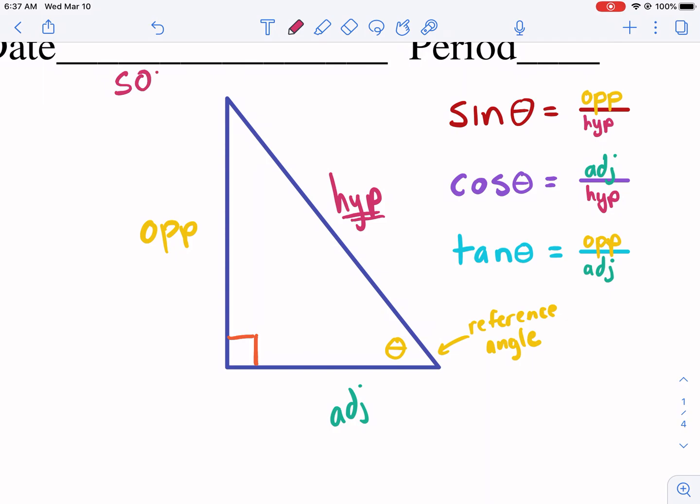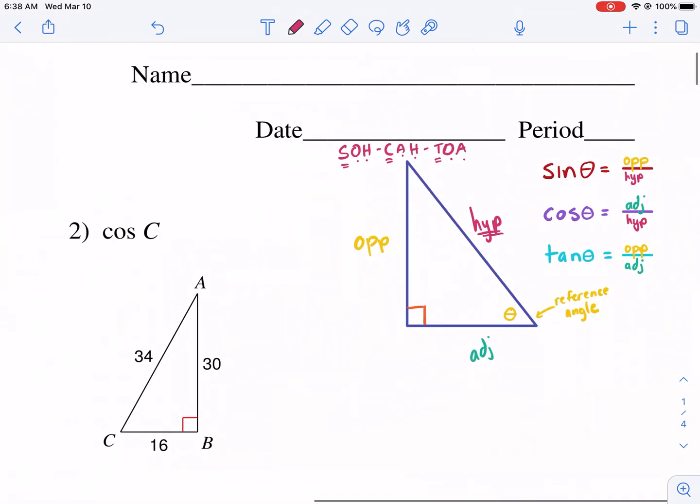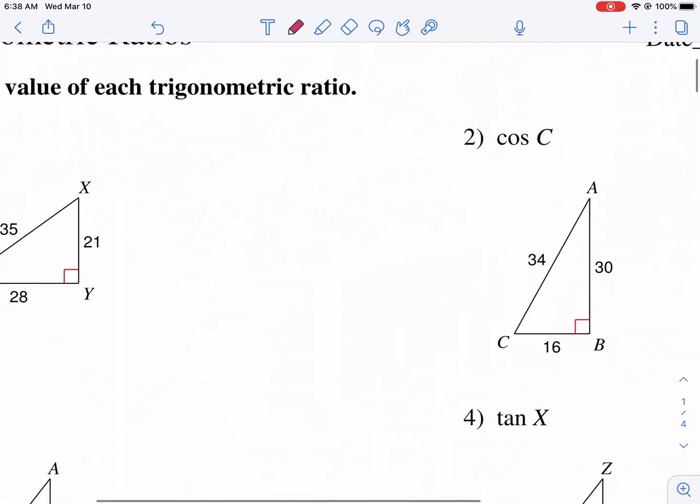One easy way to remember these trigonometric identities is SOH-CAH-TOA. This just stands for sine is opposite over hypotenuse. Cosine is adjacent over hypotenuse. And tangent is opposite over adjacent. And you've probably heard your teacher say that. I just wanted to reference that here.